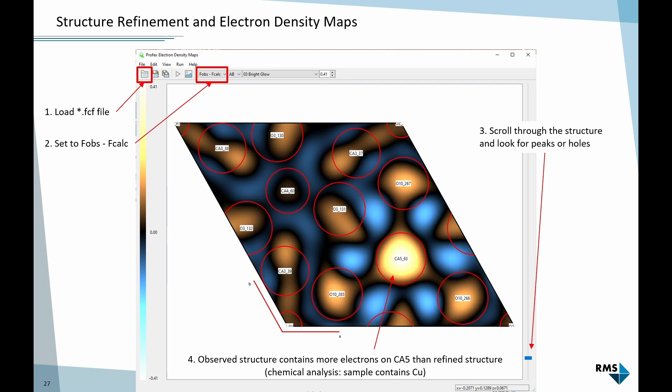Anything that pops out either as a bright spot or as a reddish spot or yellowish spot in this color scheme or as a blue valley is a misfit. What I'm seeing here is that the calcium 5 atom kind of shines or is very visible in this representation. So at the position of the calcium 5 I have a problem with my refinement.